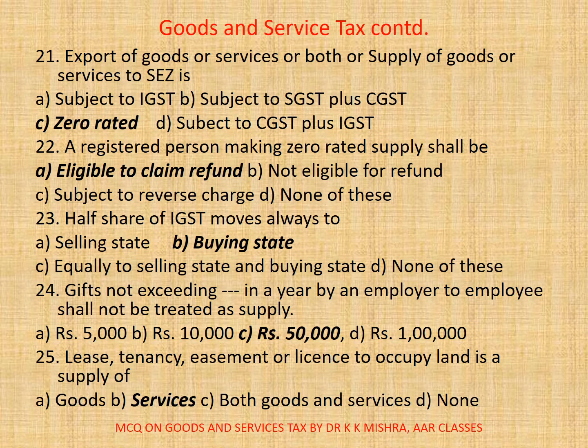Question 23: Half share of IGST moves always to — A. selling state, B. buying state, C. equally to selling state and buying state, D. none of these. Here correct option is B: buying state.